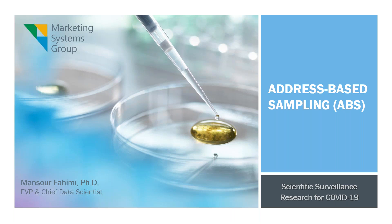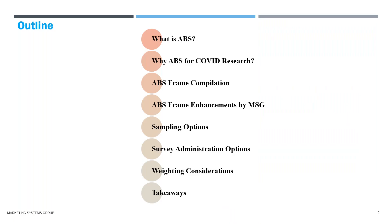In terms of the outline of the presentation, we will talk briefly about what ABS is, why it is a fantastic tool for COVID-related survey research, then we'll try to get under the hood of ABS. We'll talk about how the sampling frame is compiled, the refinements that Marketing Systems Group adds, some sampling options, survey administration options, weighting considerations, and wrap it up.